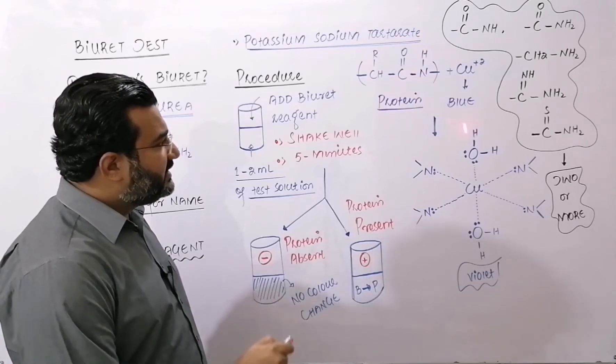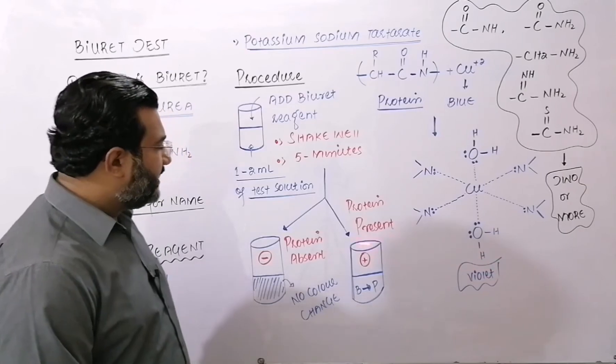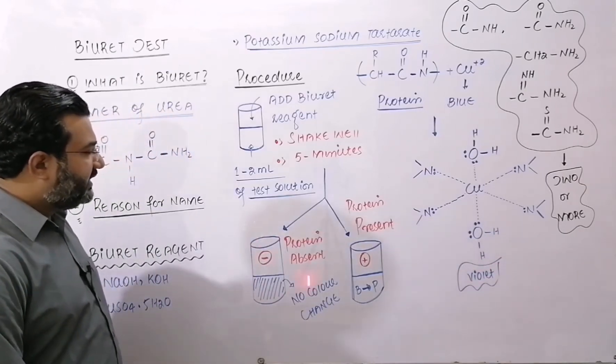If the protein is absent, then this reaction cannot take place. So blue color will not be changed to violet and that will be the indication of the negative biuret test.